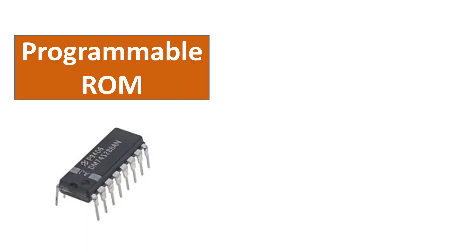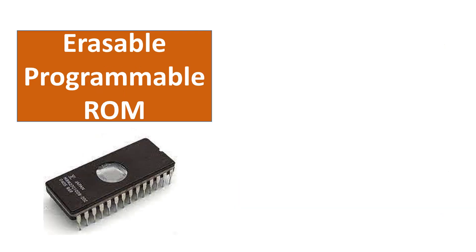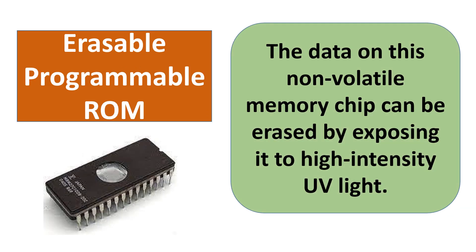In Programmable ROM, the data is written after the memory chip has been created. It is non-volatile. In Erasable Programmable ROM, the data can be erased by exposing it to high-intensity UV light.